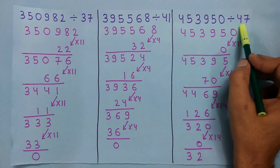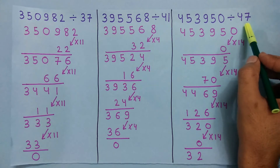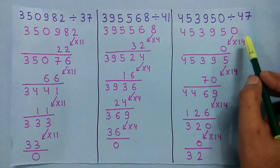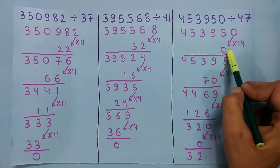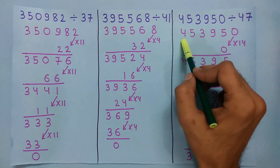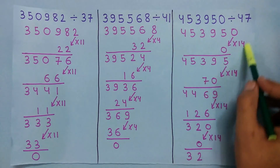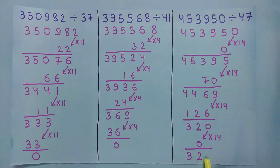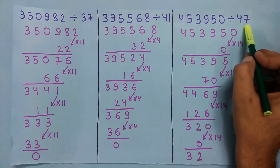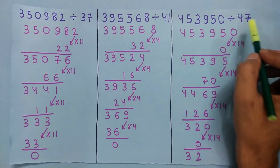Now let's take an example for 47. To check if this number is divisible by 47 or not, multiply the last digit by 14 and we get 0. Now subtract this 0 from the remaining number and we get this number. We repeat the process until we get a small number. In this case the small number is 32. Now 32 is not divisible by 47, so this number is also not divisible by 47.